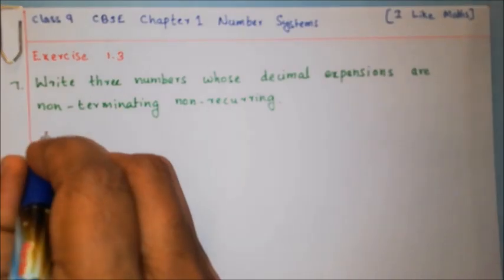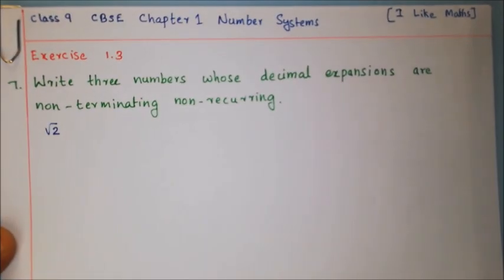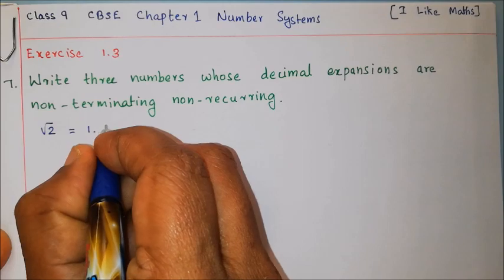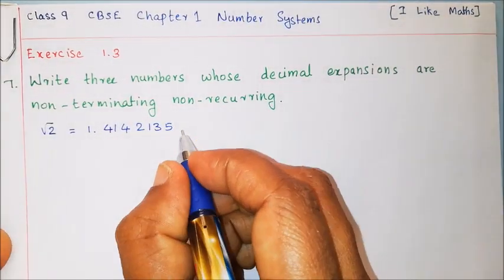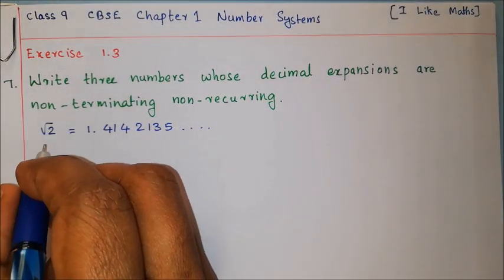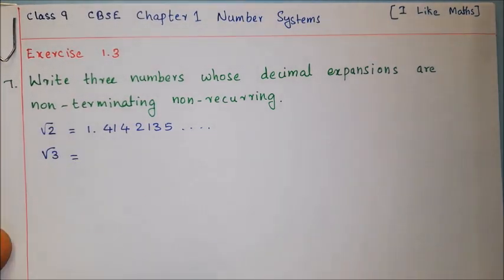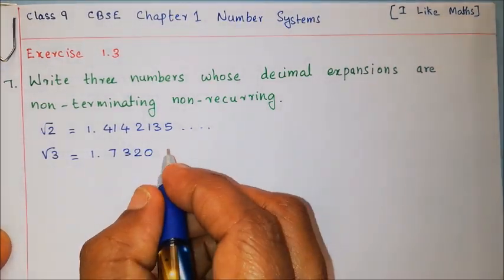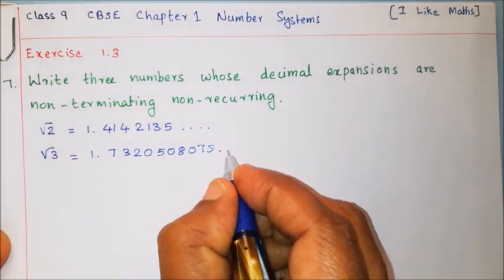The first number is root 2. Root 2 equals 1.41421356... It is just one value — a non-terminating non-recurring decimal. The second number is root 3, which is also an irrational number.